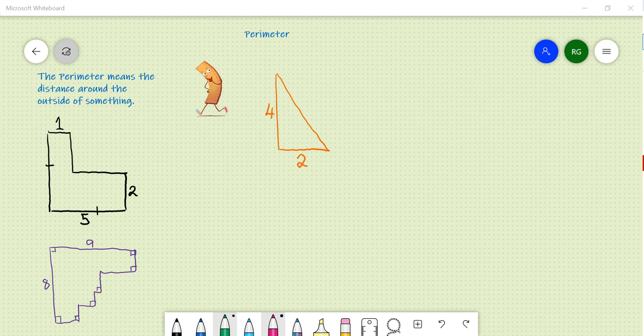Now you may have heard of the word before, and you may have a fair idea on what it means. Simply put, perimeter means the distance around the outside of something.